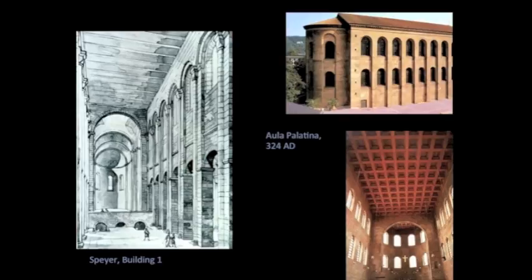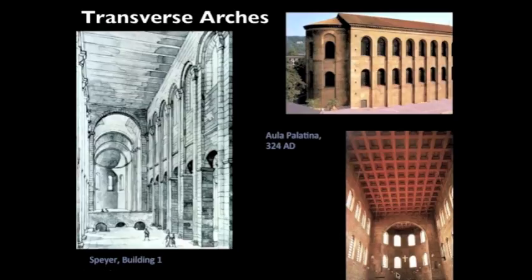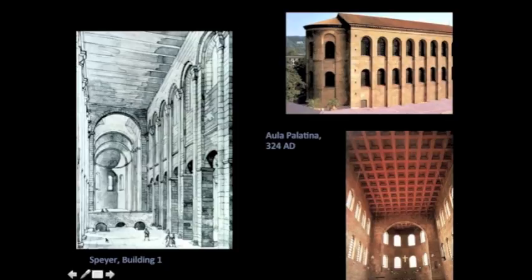Another model Charlemagne and the Ottonians would have looked at are the relics of Roman civilization scattered around German territory. This is the Aula Palatina, a late Roman building in northern Germany in the town of Trier — a severe-looking thing, with the big apse, tough brick-wall architecture with a banding of round-headed arches, a flat ceiling, and transverse arches marching along through the space. The Speyer Cathedral is an example of an Ottonian building whose interior space looks almost exactly like the interior of the Aula Palatina — long arcuated surfaces, transverse arches, and a flat ceiling.